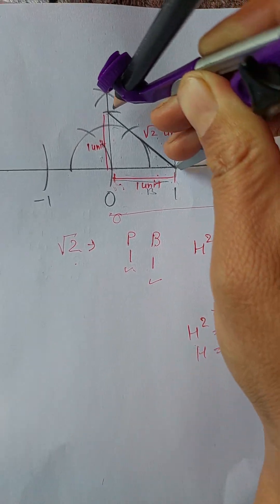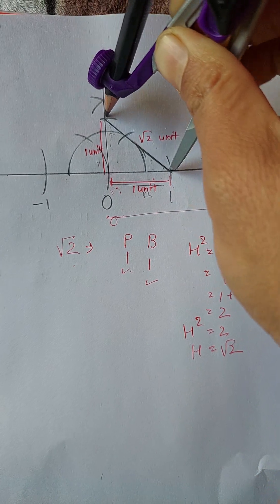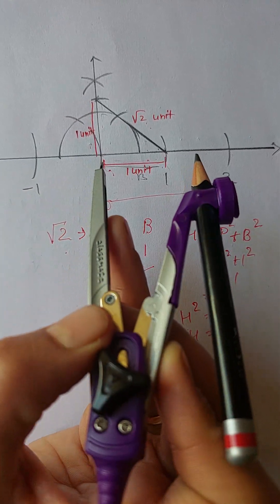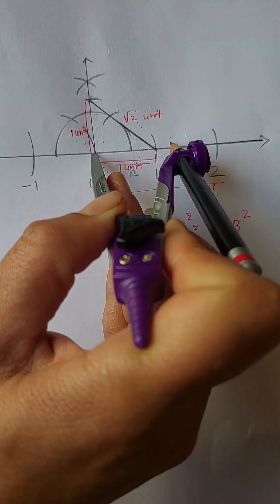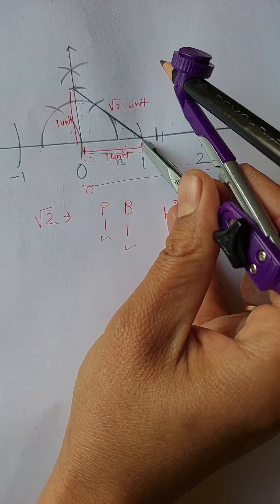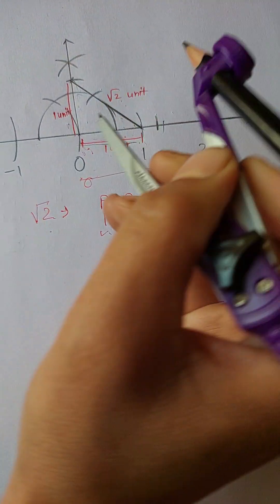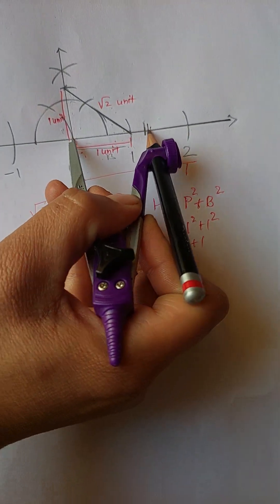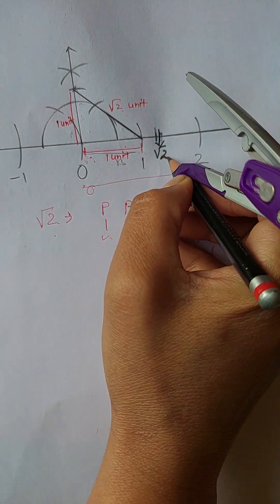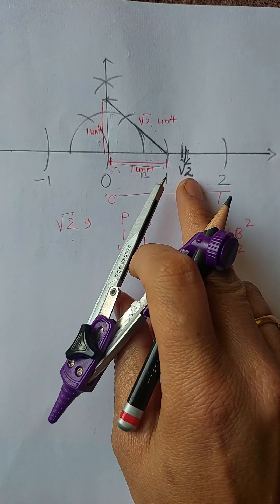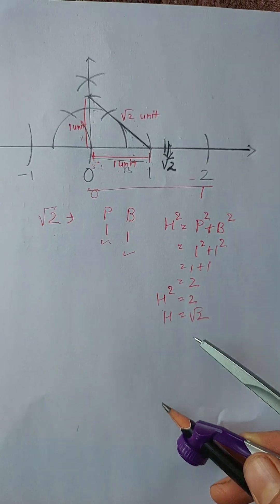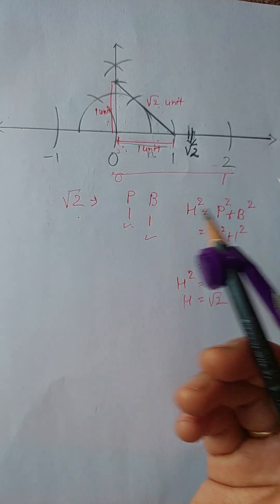We now know how to locate root two on the number line. Root two is this length — from here to here. This is how you locate root two on a number line: make your own number line, select one unit of your number line, and with that one unit construct a right angle triangle with perpendicular and base each one unit.